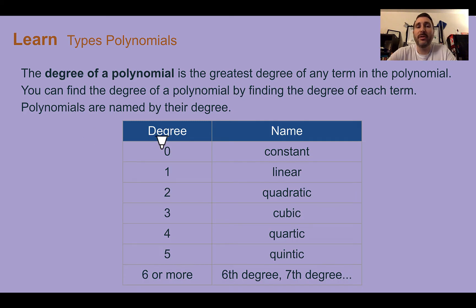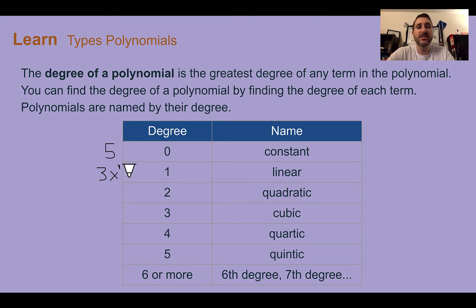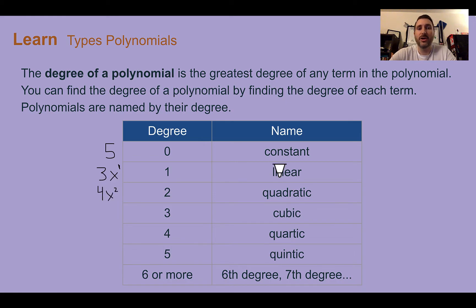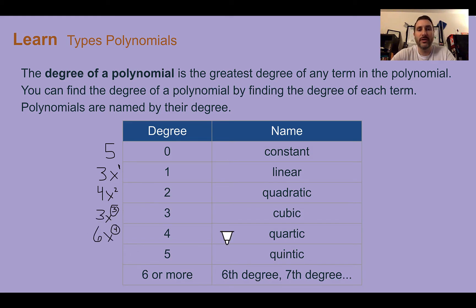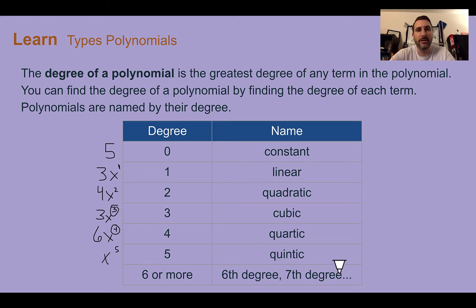If the polynomial has a degree of 0 — like just the number 5 with no variable — it's called a constant term. A degree of 1 is called a linear term, because if you were to graph it, it would make a straight line. A degree of 2 is called quadratic. A degree of 3 is cubic. A degree of 4 is quartic, degree of 5 is quintic, and anything 6 or higher we can just say 6th degree, 7th degree, 8th degree, and so on.